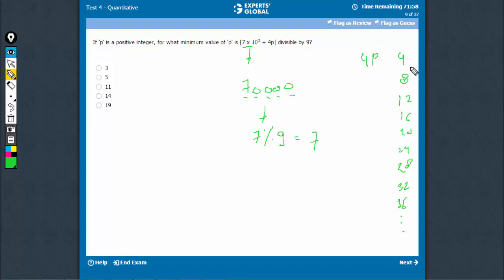And now, let's find out that 7 plus what number gives me remainder 0 with 9. So, 7 plus 4 would be 11, that's not divisible by 9, 7 plus 8 is 15, then you have 19, then you have 23, then you have 27.